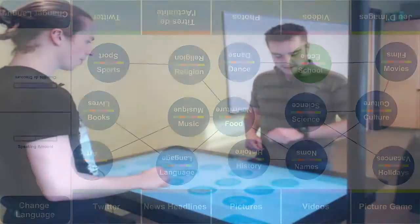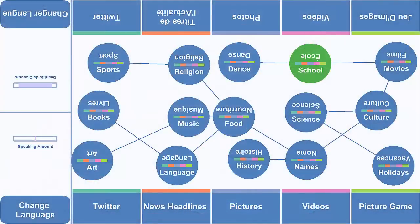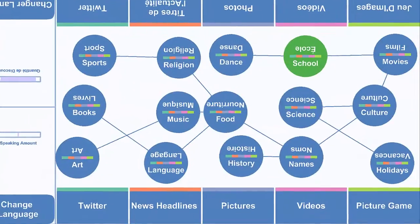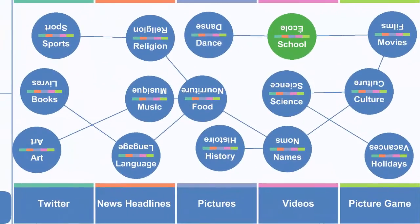Our system includes many different conversation topics to choose from, along with four different activities. These include Twitter, news headlines, pictures, and a picture game activity.